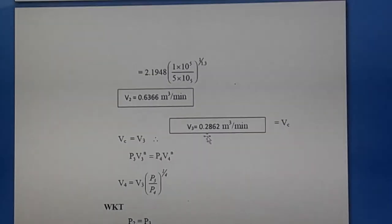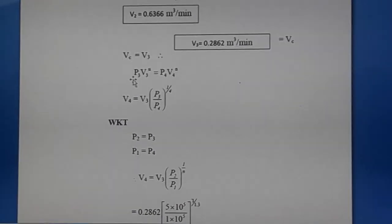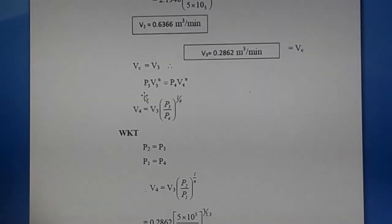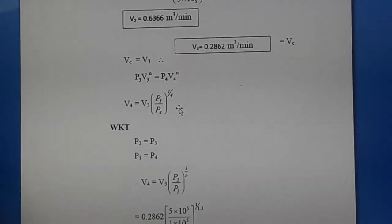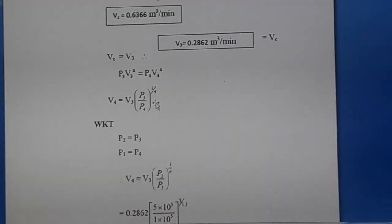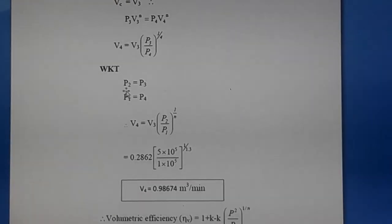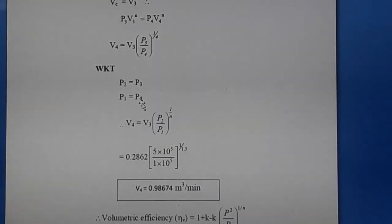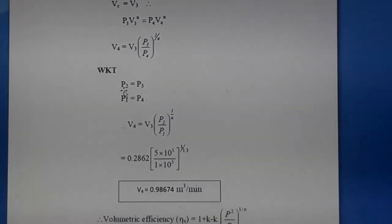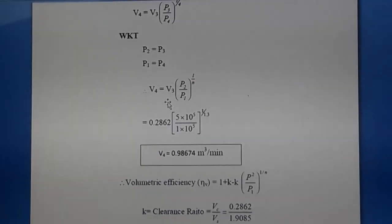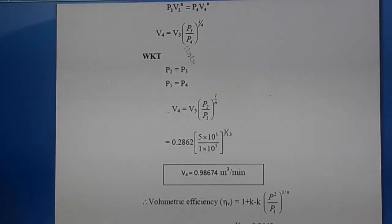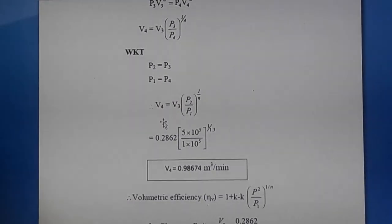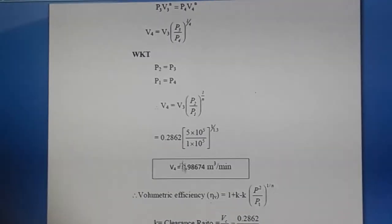V3 equals the clearance volume Vc = 0.2862 m³/min. For expansion process 3→4: p3V3^n = p4V4^n, so V4 = V3 × (p3/p4)^(1/n). Since p2 = p3 (constant pressure discharge) and p1 = p4 (constant pressure suction), this becomes V4 = V3 × (p2/p1)^(1/n). Substituting values, V4 = 0.98674 m³/min.